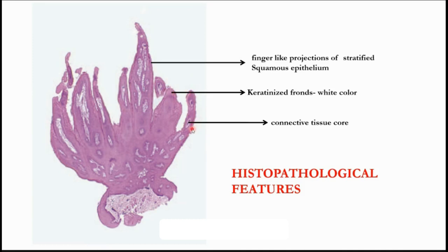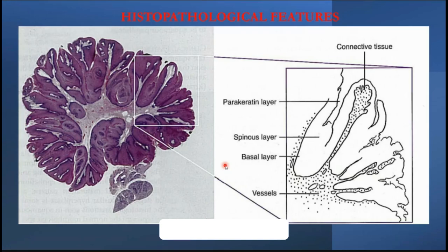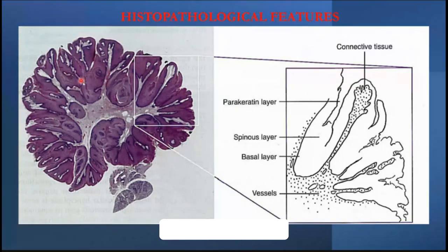These finger-like projections are also called fronds — another terminology used is fronds, though saying finger-like is perfectly fine. That's the histopathology of papilloma. When you correlate the clinical features with histopathology, the diagnosis is very easy. In this other image you have more fronds or finger-like projections, and you can see the connective tissue core in each of these finger-like projections. This is your stalk, and underneath that stalk you will have the connective tissue with blood vessels and everything.